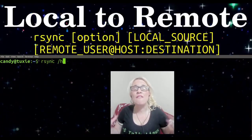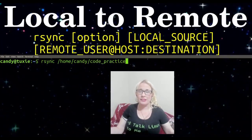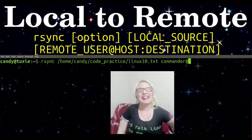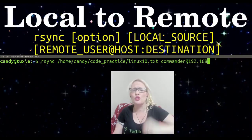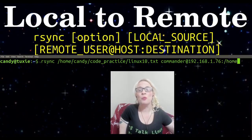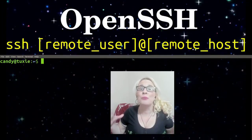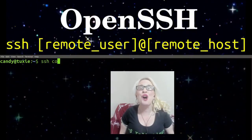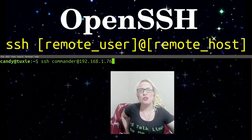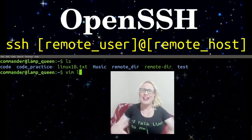In this example, we're taking a file called Linux10.txt, which is in my code practice directory — a subdirectory of my home directory. I'm taking that file and transferring it over to commander's home directory. Commander is at 192.168.1.76. I'm going to use a handy tool called OpenSSH to SSH into commander's remote server and check that the file's there. It's there, so we're all good.